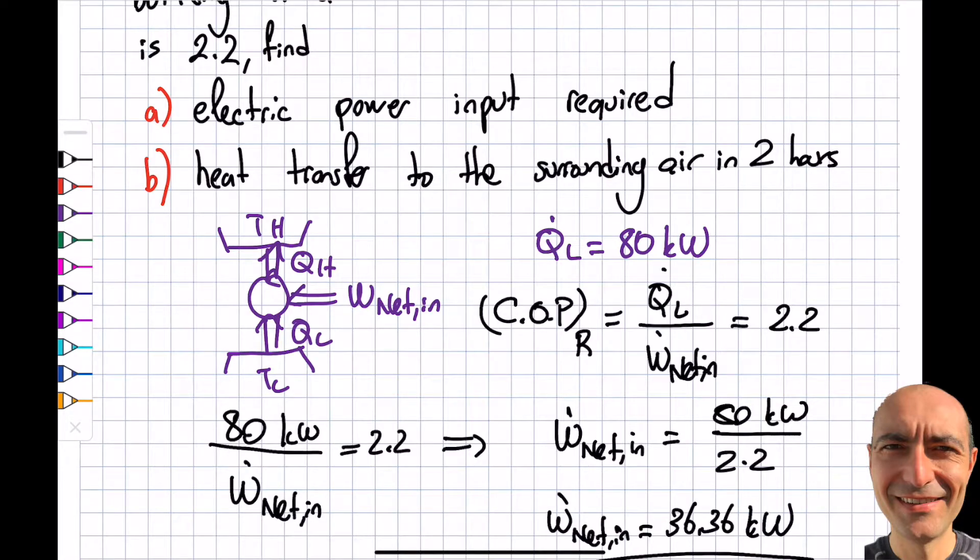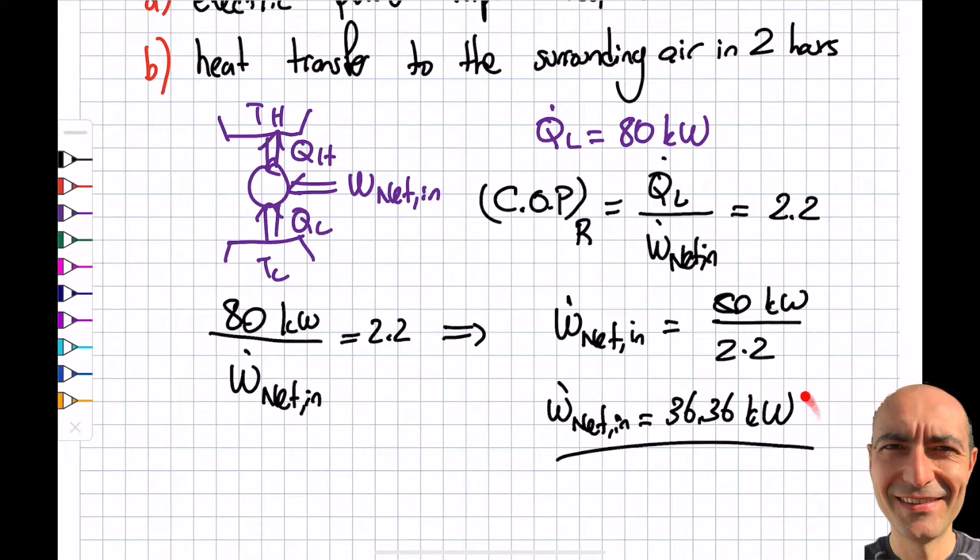I'm paying 36.36 kilowatts, but from my room the energy removed is 80 kilowatts. Do you see what I mean? That's why the coefficient of performance is more than one. It's like magic from that angle.